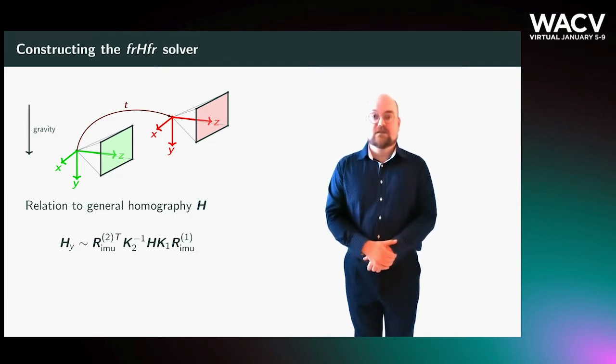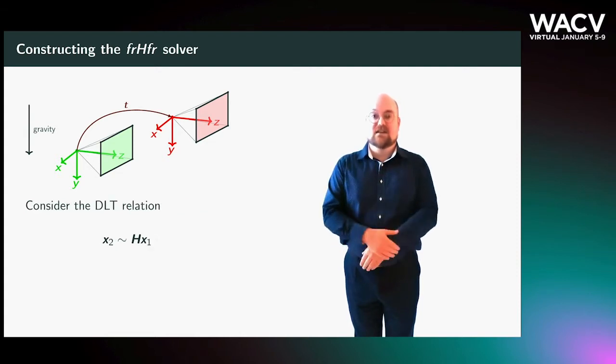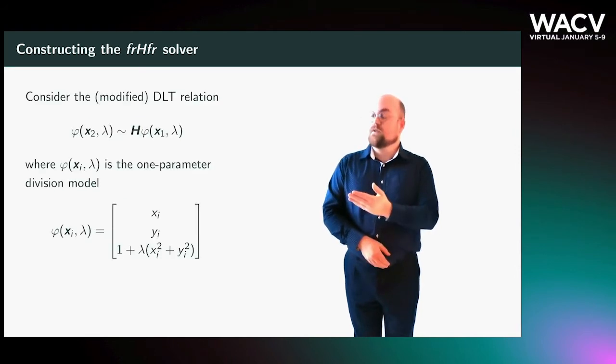Since a homography maps image correspondences on a plane, we know that this must be satisfied. This assumes the pinhole camera model is applicable, which it is not when lens distortion is present. Therefore, we use the one-dimensional division model to modify the relation, and we end up with the following formulation.